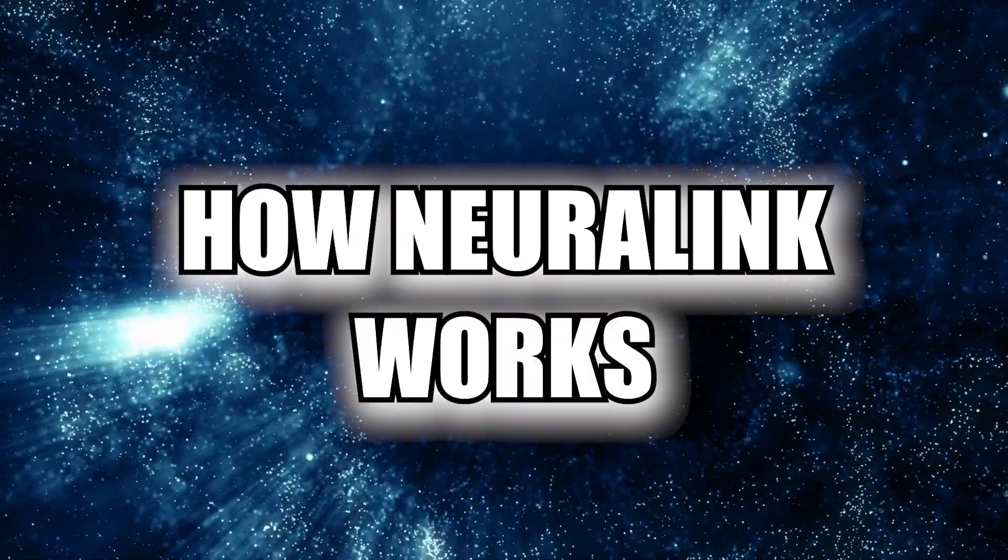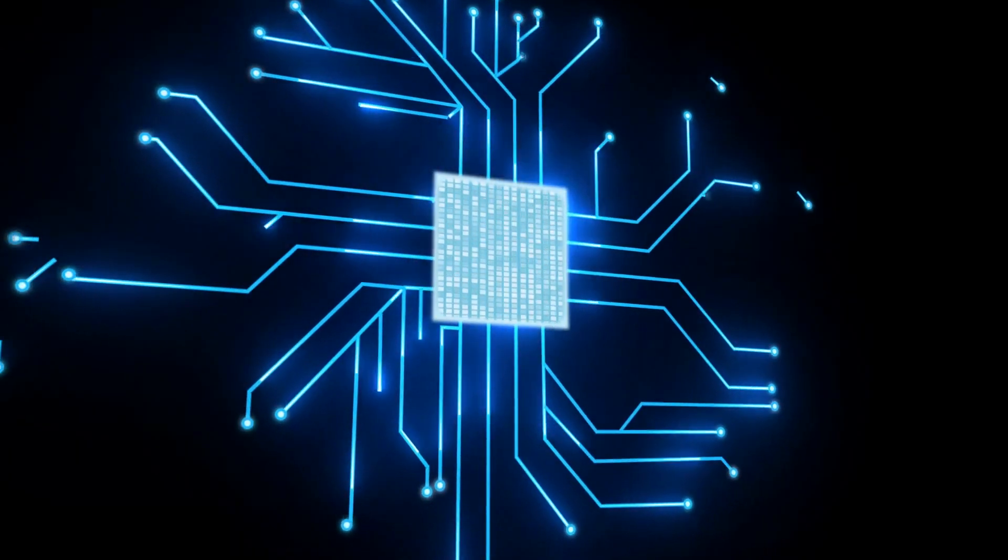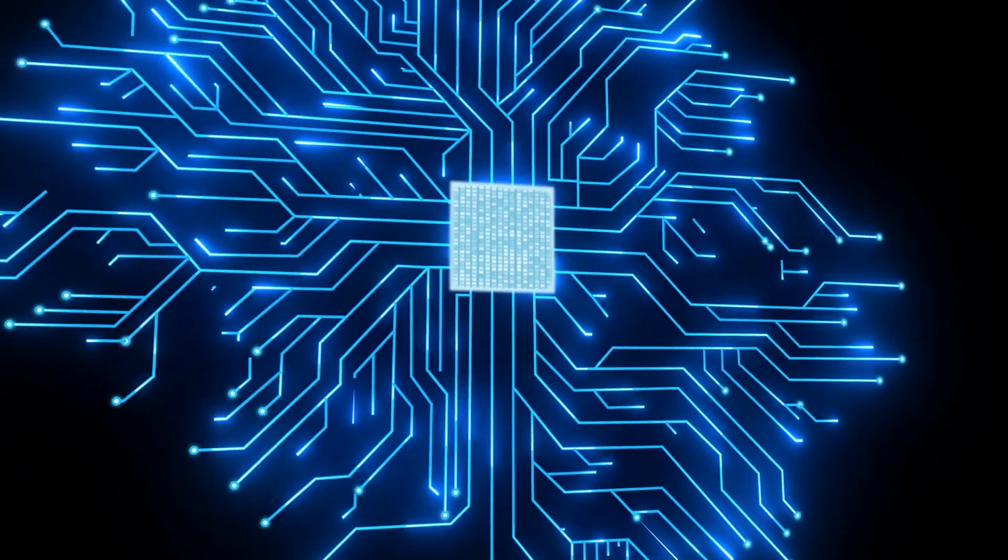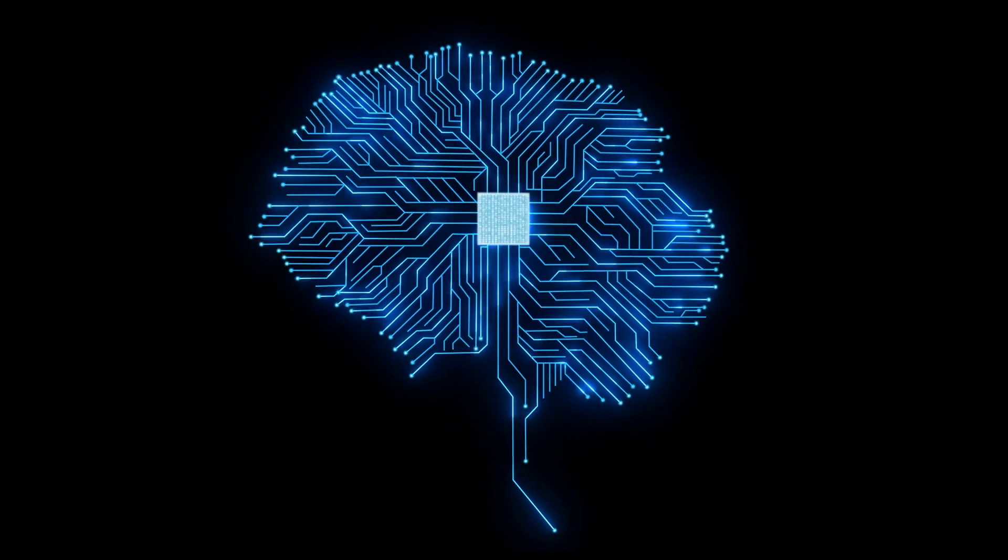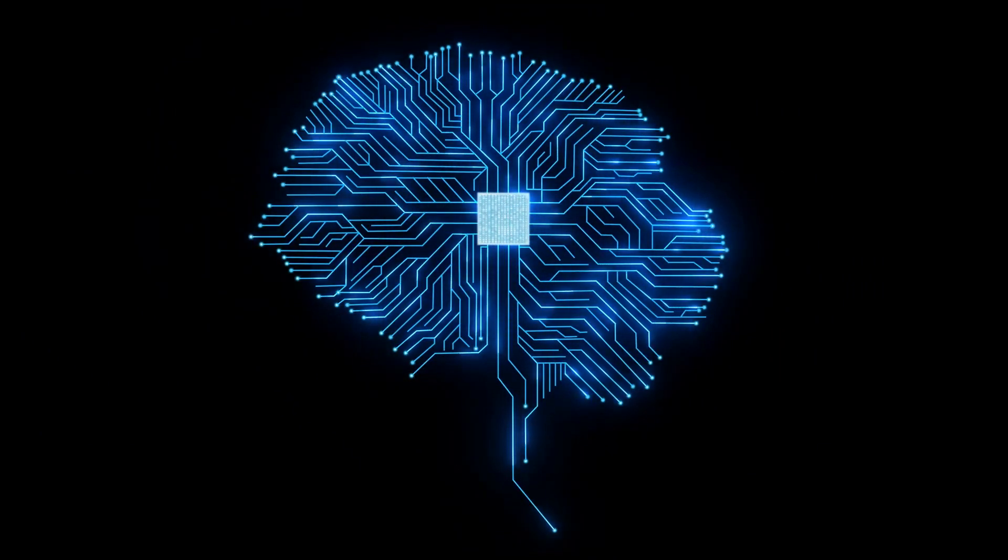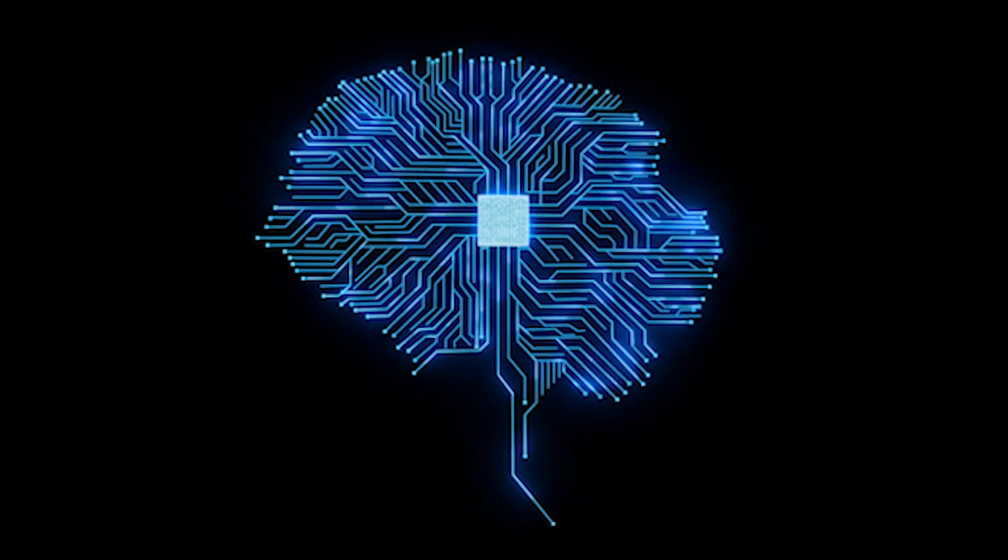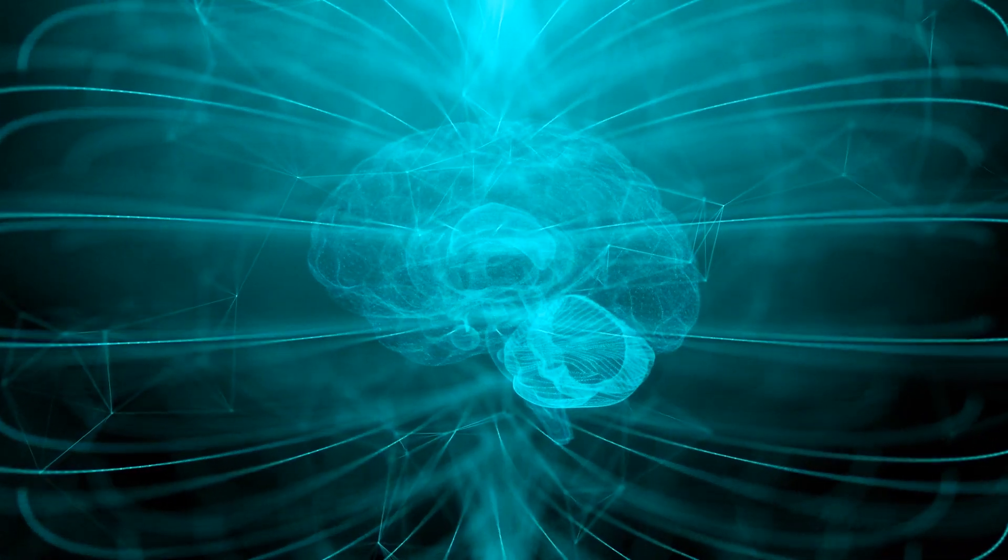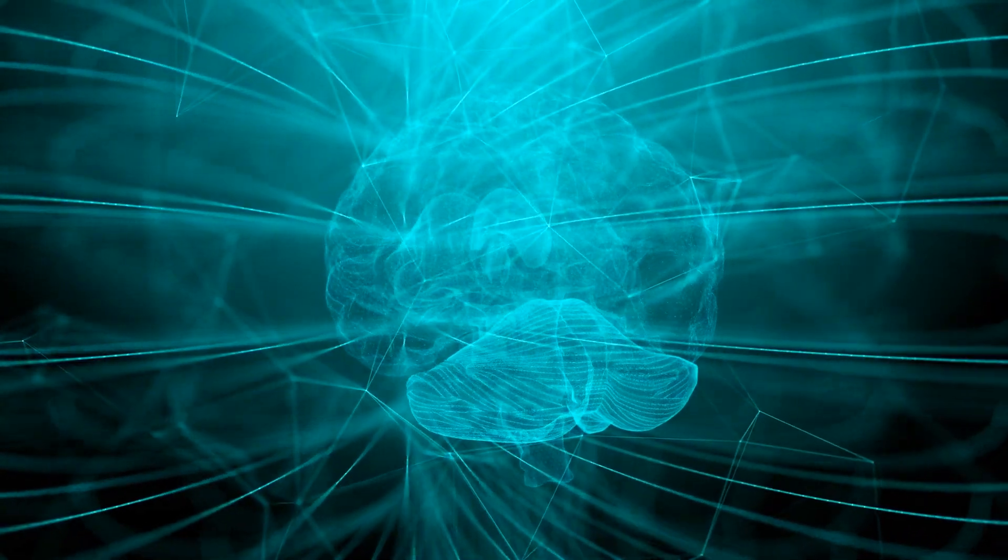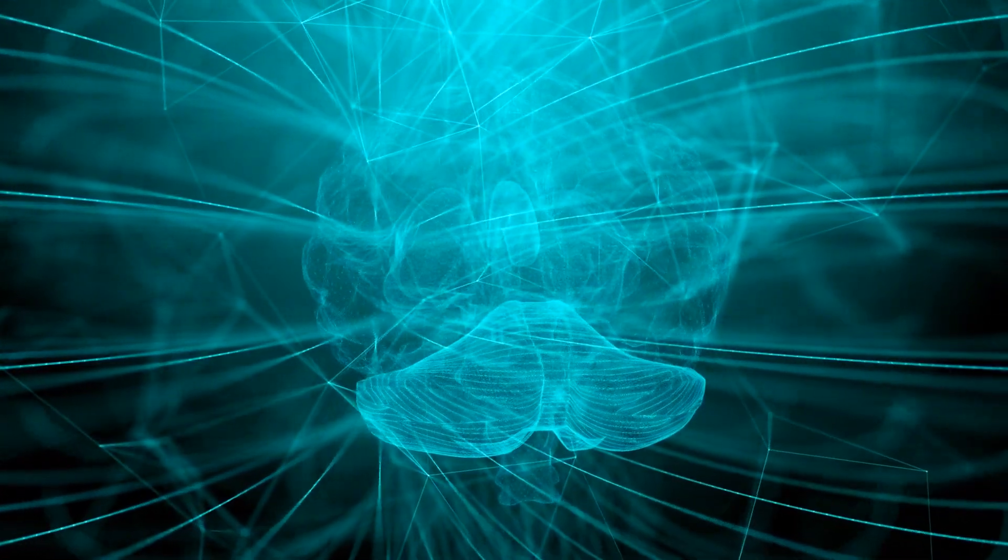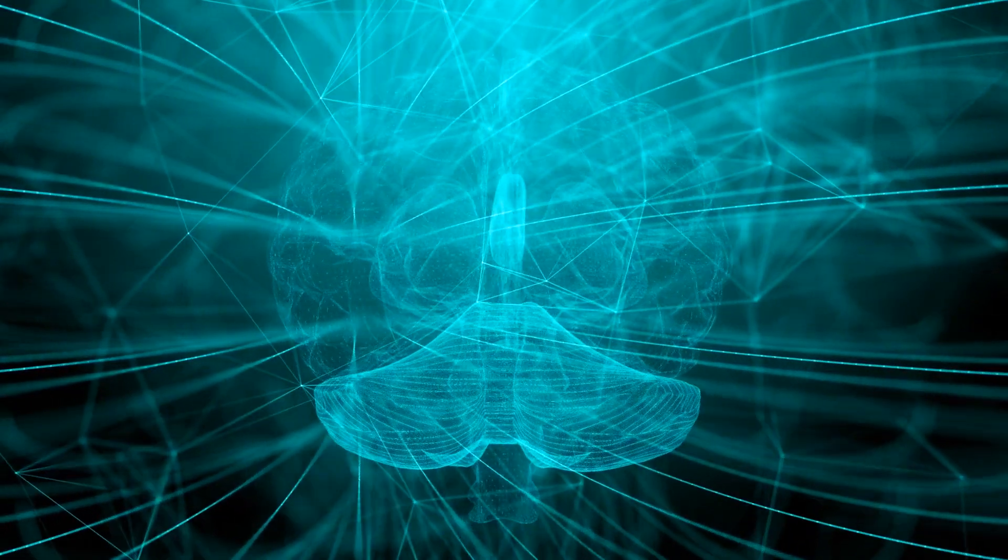How Neuralink Works. At the heart of Neuralink's groundbreaking technology lies a sophisticated system of ultra-thin threads, each thinner than a human hair, meticulously designed to interface with the intricate neural networks of the brain. These threads, armed with an array of miniature electrodes, serve a dual purpose: to record neural activity with unparalleled precision and to stimulate specific regions of the brain in real time.